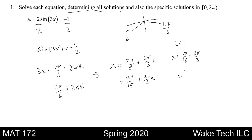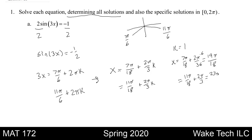Similarly, we have 11 pi over 18 plus 2 pi over 3. To add these together I need to multiply by 6 — this becomes 12. 12 plus 7 is 19, so this is 19 pi over 18. And the second one similarly, plus 12 is going to be 23 pi over 18.